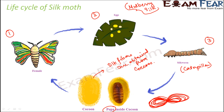This completes the life cycle of a silk moth. Once the adult moth comes out of the cocoon, the process continues — the adult moth lays eggs again. A female moth lays around hundreds of eggs at one time. These eggs hatch into larvae called caterpillars or silkworms, and the process continues over and over again.